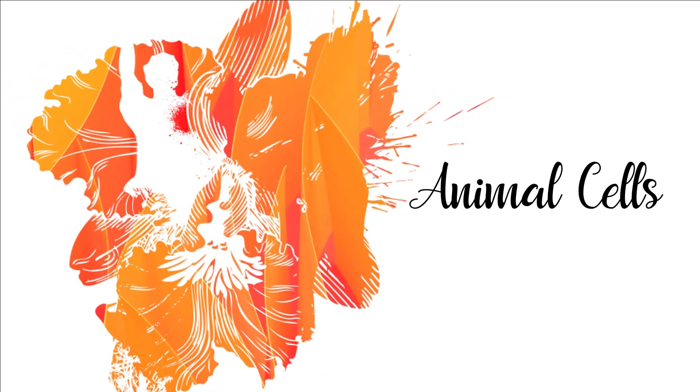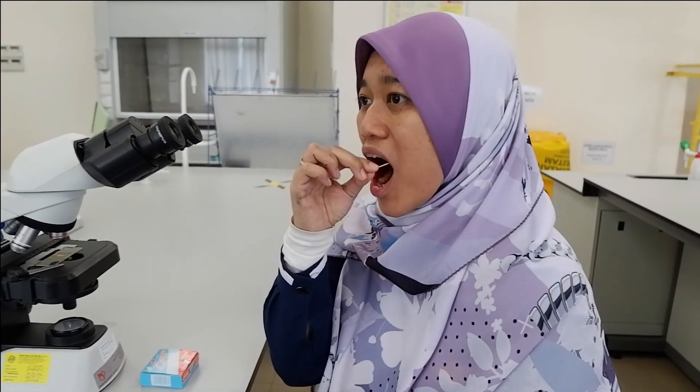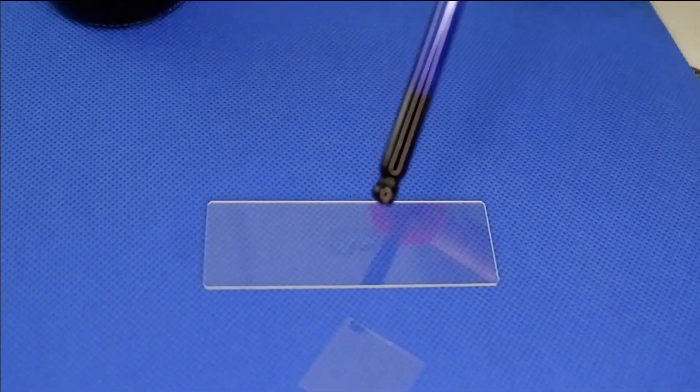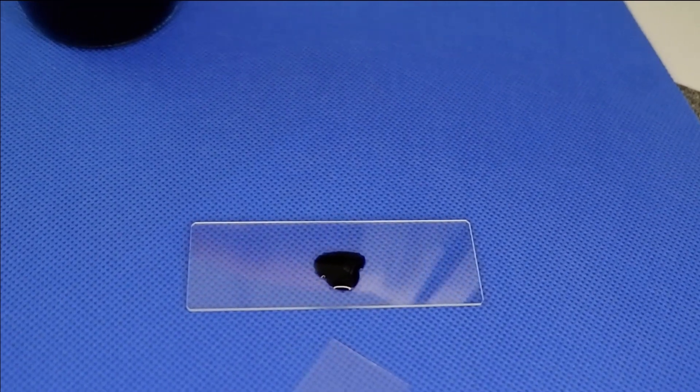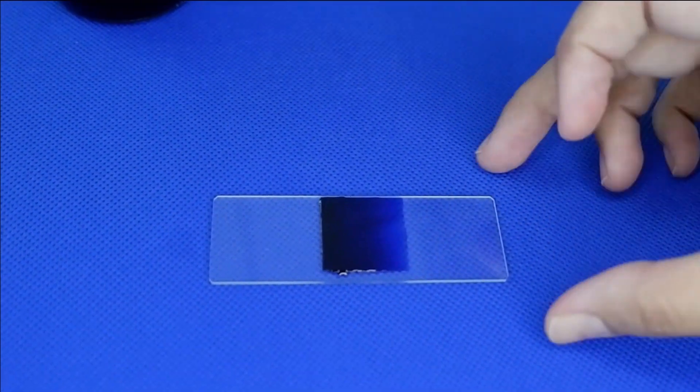For animal cells, we are going to use cheek cells and stain them with methylene blue. Use a toothpick to gently scrape inside of your cheek. Then smear and mix the cells in distilled water. Next, put a drop of methylene blue to stain the cell. Place one edge of cover slip to one side of the stain and slowly lower the cover slip.